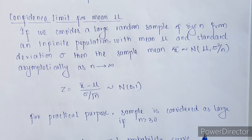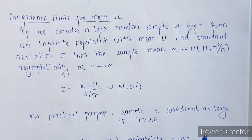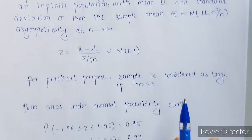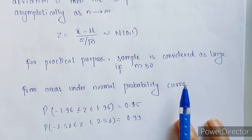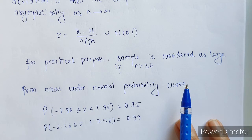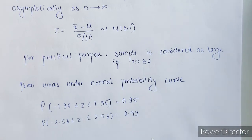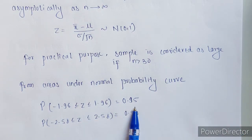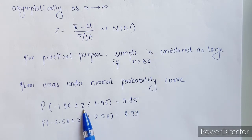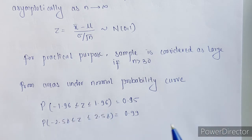Let's find out how to calculate the confidence interval for mean mu. From the standard normal probability curve, from that particular normal distribution table, we know that if our level of confidence is 0.95, then the standard normal variate is going to lie between minus 1.96 and plus 1.96.